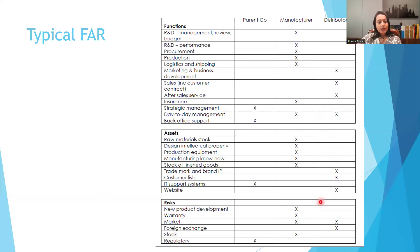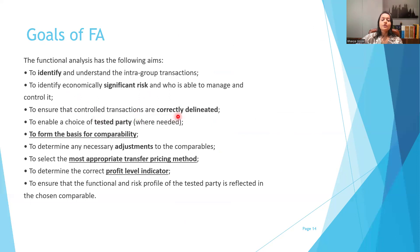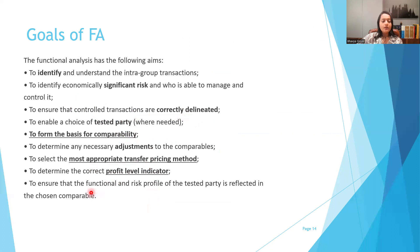A typical FAR analysis table can be used to summarize findings in a transfer pricing report. The goals of functional and asset risk analysis include identifying intra-group transactions and significant risks, ensuring controlled transactions are correctly delineated, enabling the choice of tested party, forming the basis for comparability, determining necessary adjustments to comparables, selecting the most appropriate transfer pricing method and profit level indicator, and ensuring the functional risk profile of the tested party is reflected in the chosen comparables.